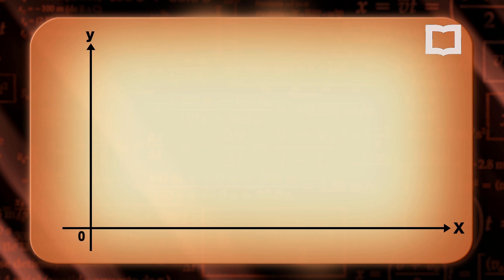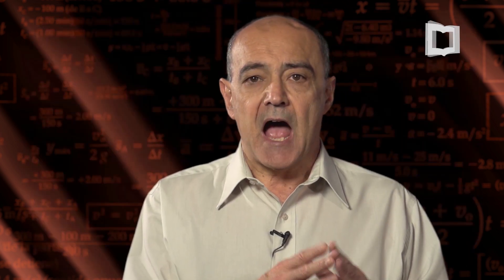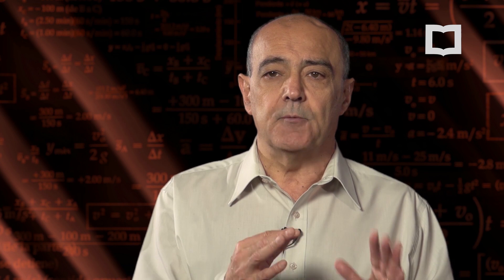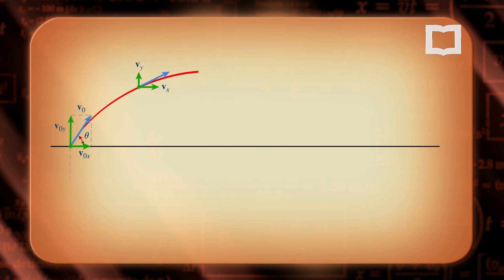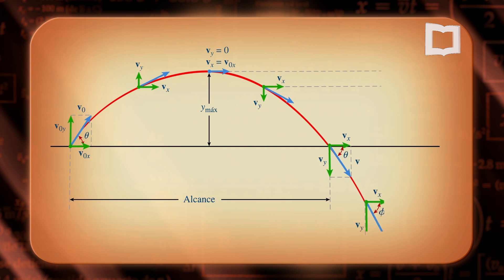Asimismo, esto se puede ver en un gráfico donde vemos la trayectoria e indicamos la posición del proyectil para distintos tiempos. También sobre el mismo gráfico vamos a ver qué forma va adoptando el vector velocidad. El vector velocidad, en todos los casos, es tangente a la trayectoria, es decir, a la parábola que describe la posición en función del tiempo.